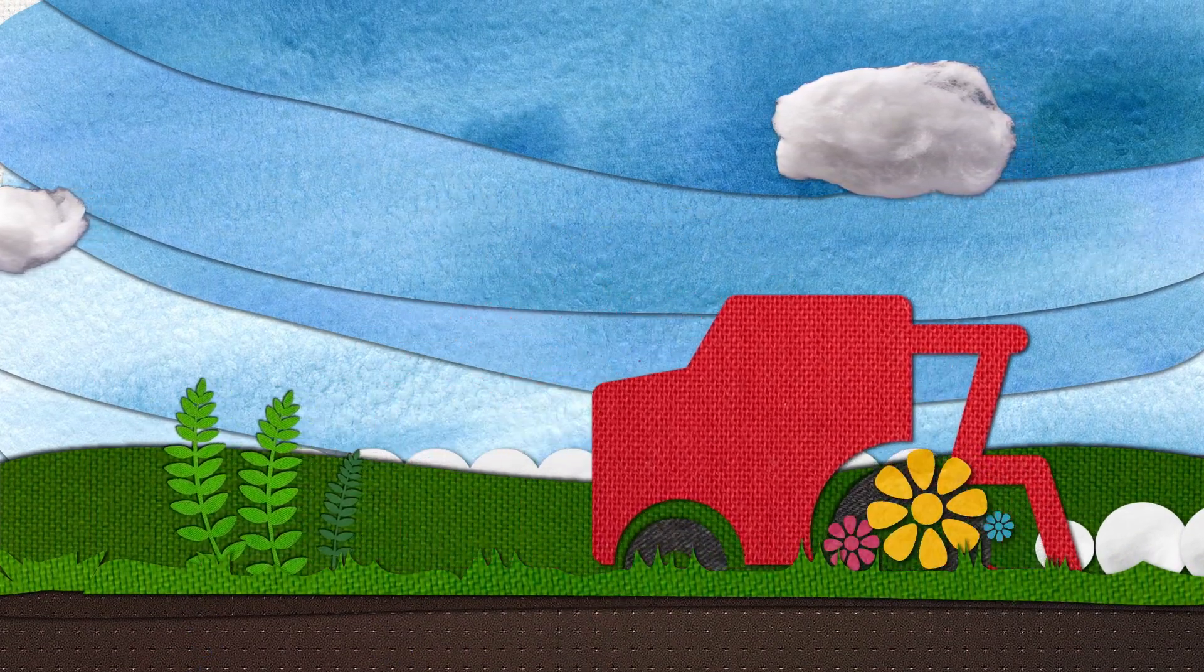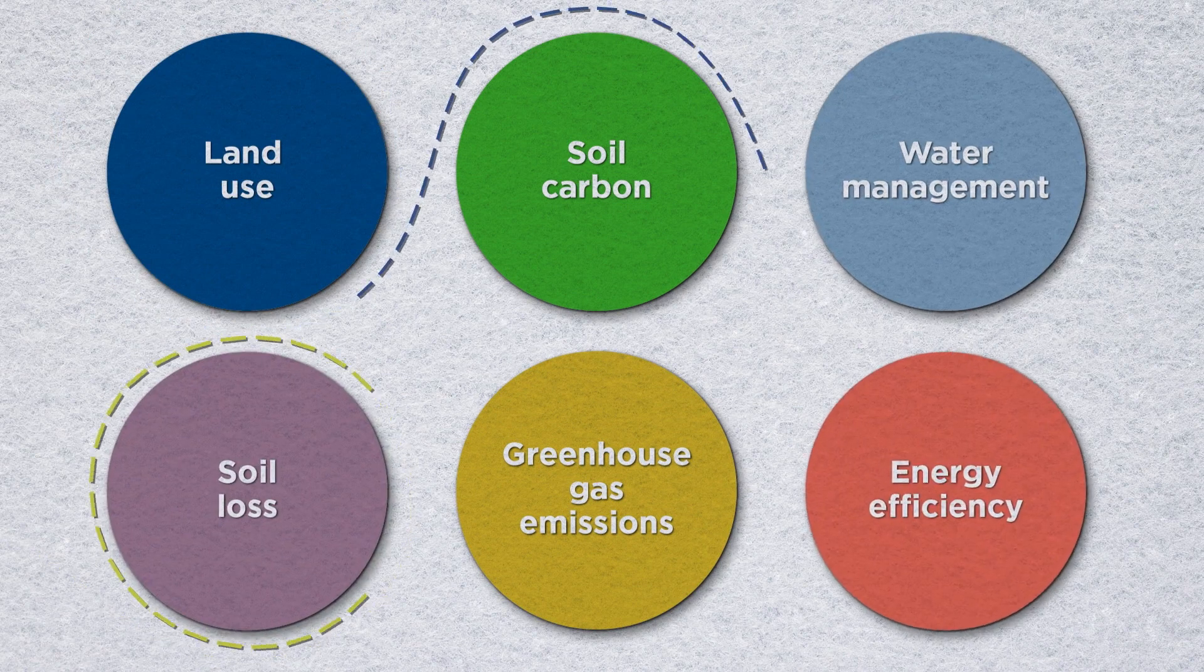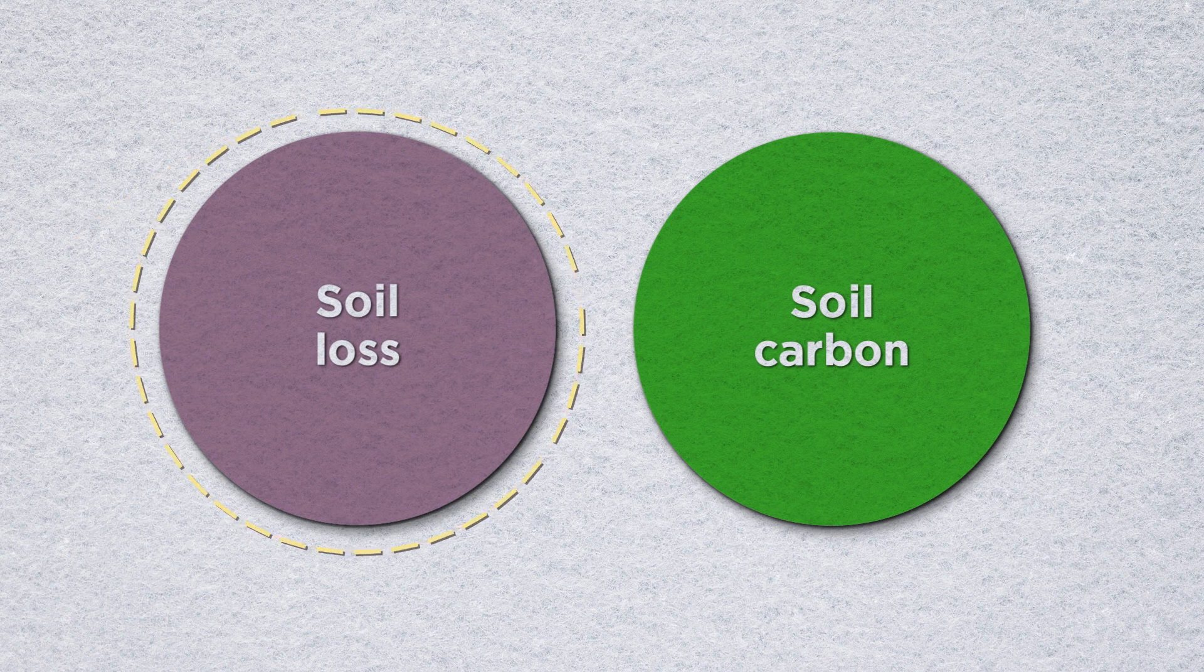But for soil to care for us, we have to care for it. The U.S. Cotton Trust Protocol has set continuous improvement goals in six key sustainability metrics, two being dedicated to soil.